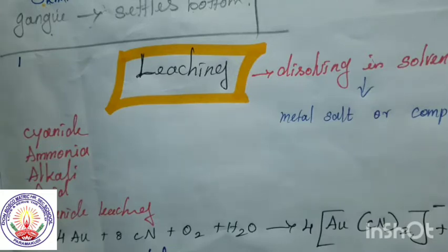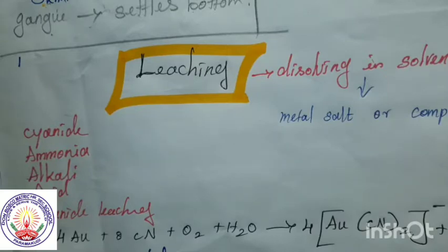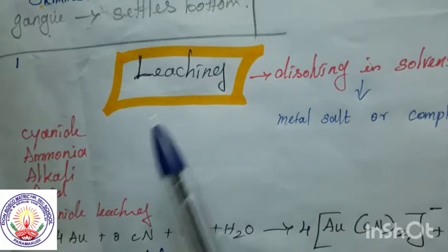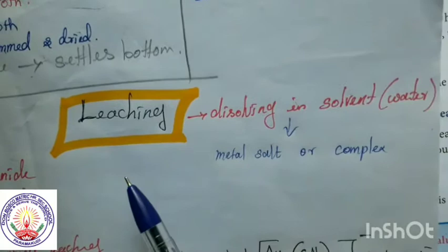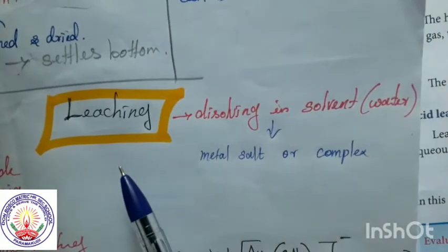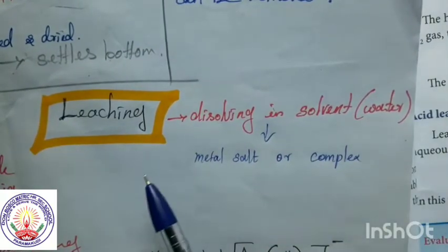Those two methods are gravity separation, also called hydraulic wash, and the second important method is froth flotation. Now we shall see the remaining method, that is leaching. Leaching is nothing but dissolving in a suitable solvent.